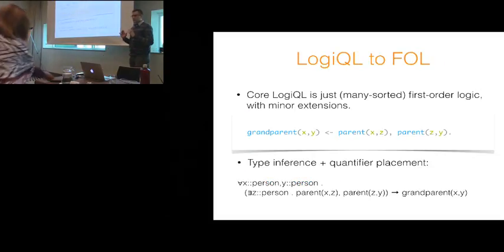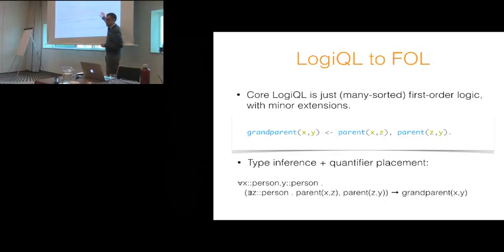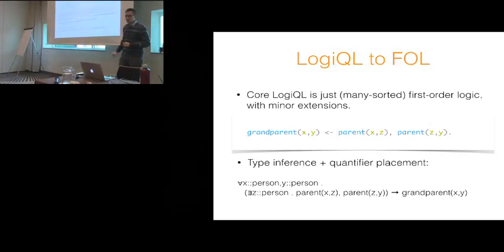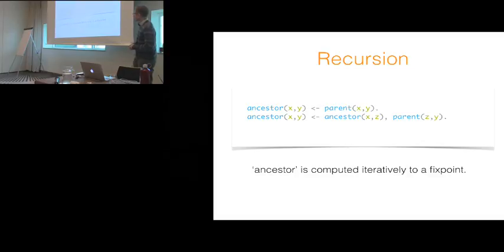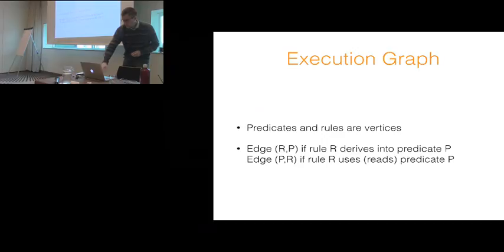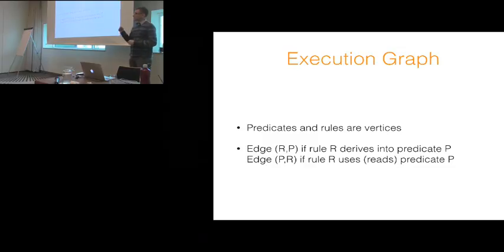You can think of the core of logical as being first-order logic with some minor extensions. When users write code, internally we do type inference and quantifier placement and turn it into something that looks very much like first-order logic with explicit quantifiers and types. The language also supports recursion — if you write a set of rules that has a cyclic dependence, this is identified as a fixed-point computation and automatically run to completion. In order to evaluate all of these rules and incrementally maintain them, we work with what is called an execution graph — essentially a dependence graph — with vertices which are rules and predicates.